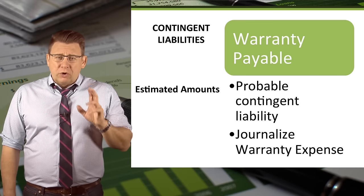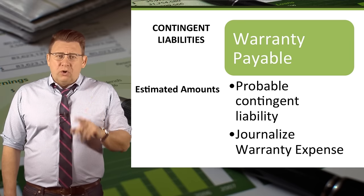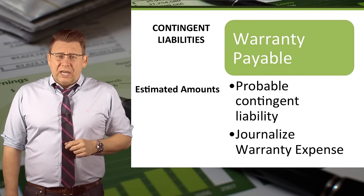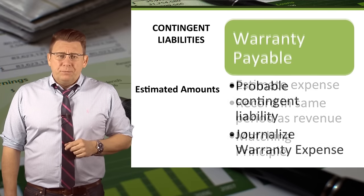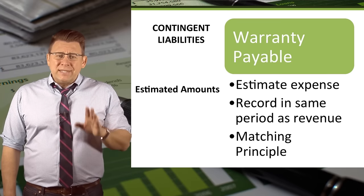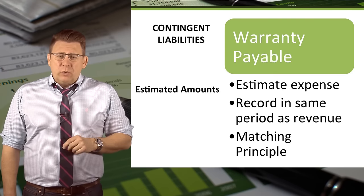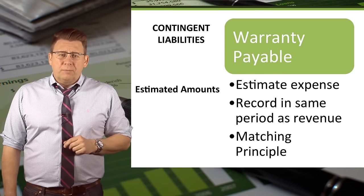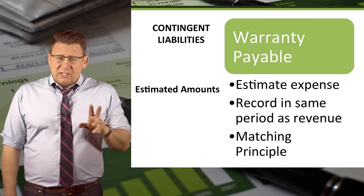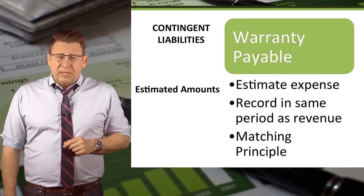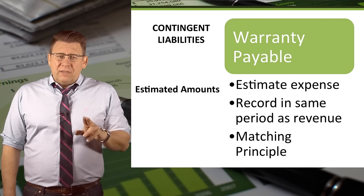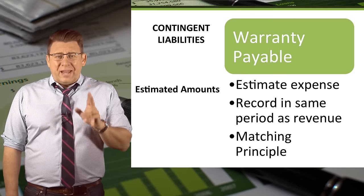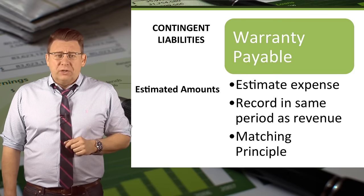This means we will record a journal entry to record the warranty liability before the actual warranty claims happen. This is also an estimated liability because we don't know exactly how many units will require warranty work. We estimate the expense and liability and record it in the same period as the sale. This adheres to the matching principle which we learned about earlier.